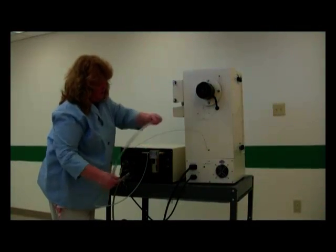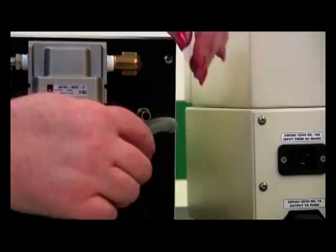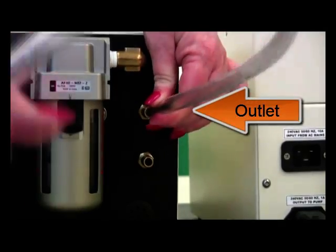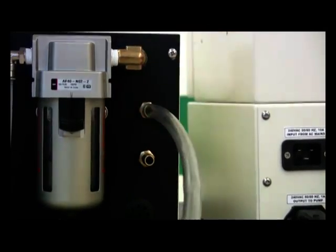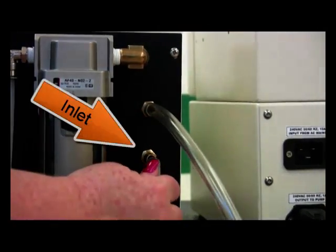Last, hook the inlet and outlet hoses to and from your chiller to the inlet and outlet on the pump.